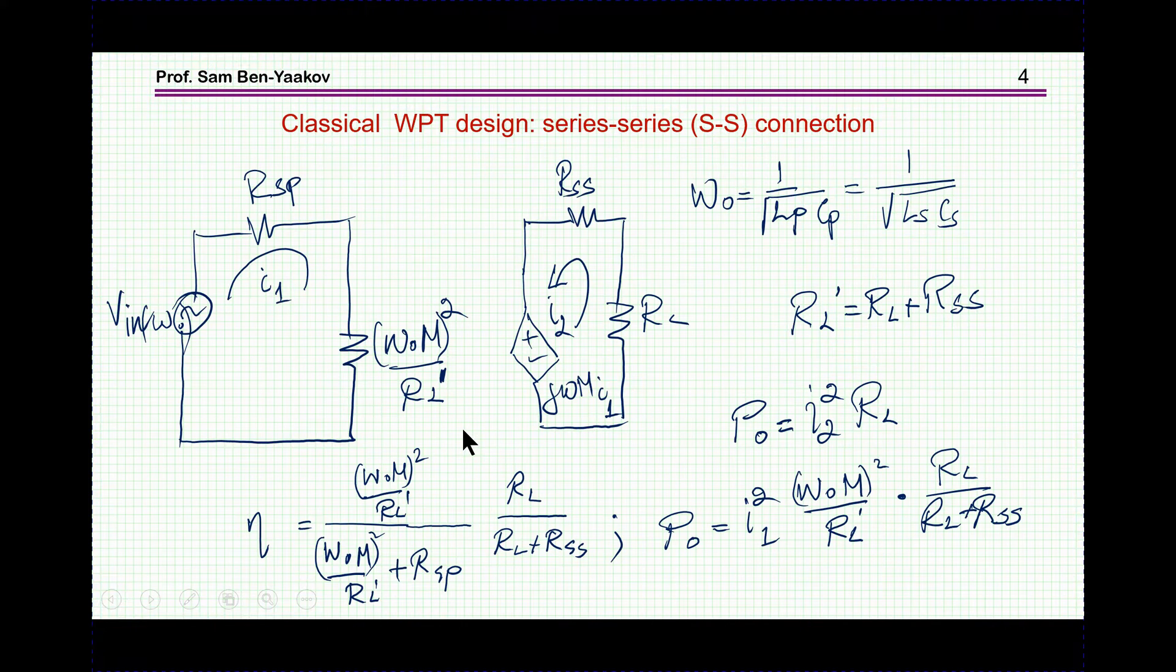Now I have shown, and it is well known in the literature and you can find it in the videos that I have mentioned, that you can describe the system of the series-series connection as two loops which are now independent because this dependent voltage source is representing the coupling. And here this is a reflected load from the secondary, from the receiving to the transmitting antenna. This is the reflected load.